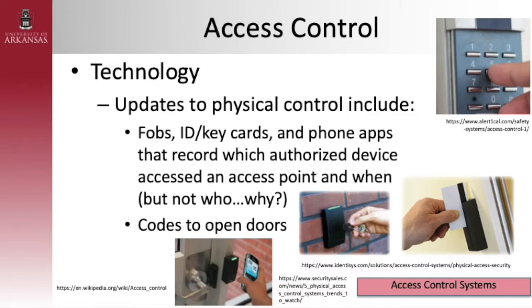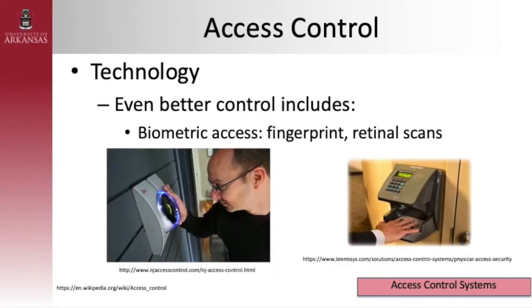Technology is typically applied to access points. In its most basic form it's locks and keys — we're talking about fobs, ID key cards, phone apps, and codes. At their core, these record when a room or space is accessed. The next layer, especially with fobs and key cards, records who, as well as where and when a room was accessed — though you still don't know if someone else is using another person's key or fob.